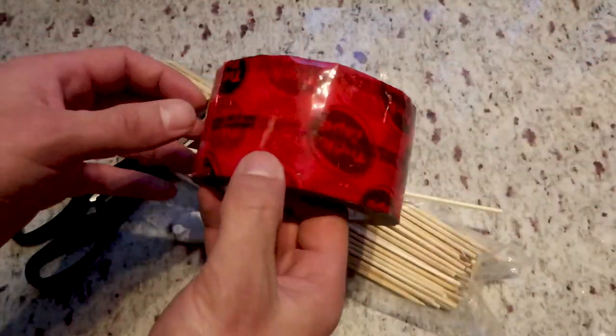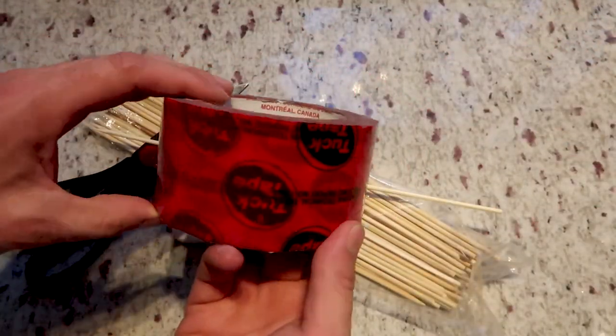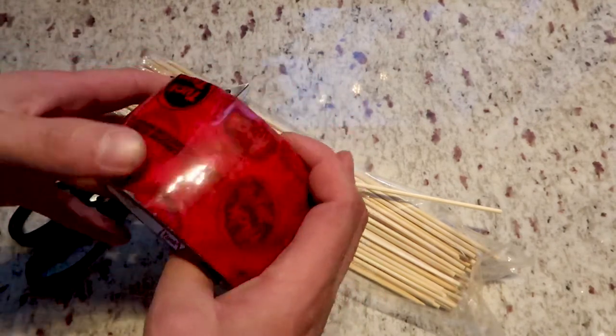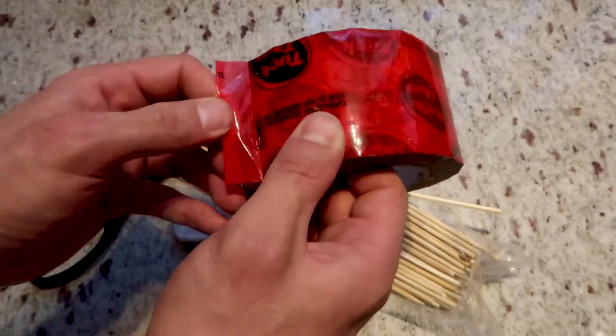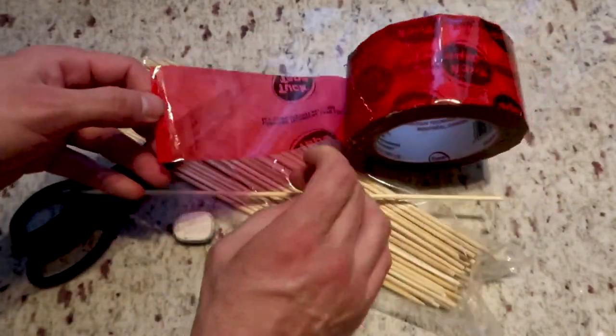I'm going to use sheathing tape and a bamboo skewer to retrieve objects dropped into tight spaces. I'm going to open up the sheathing tape, which is a construction material. It's very sticky.